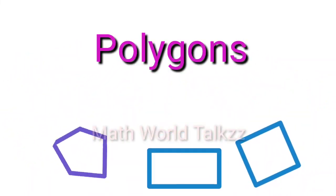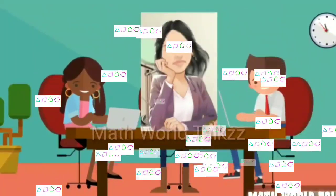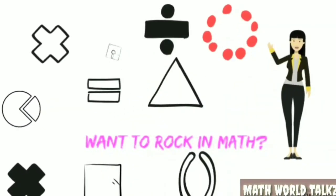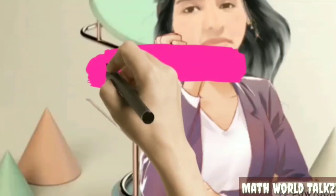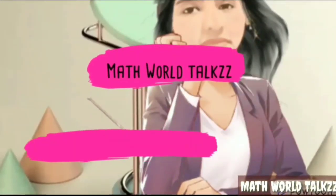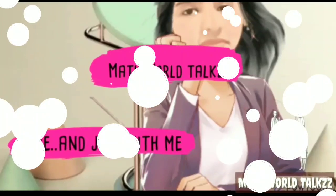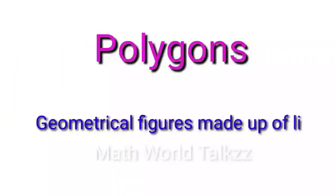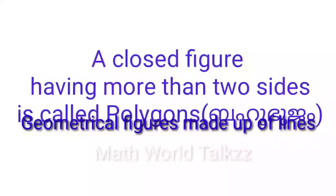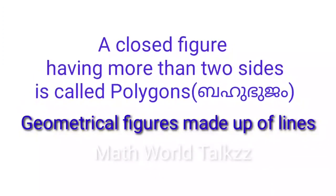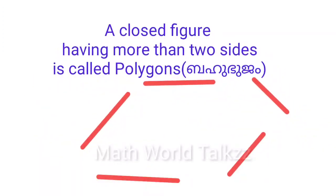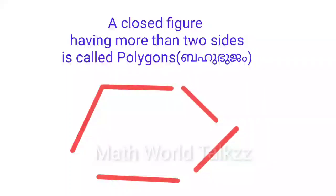Let's learn about polygons. Polygons are geometrical figures made up of lines, or we can define them as closed figures having more than two sides.